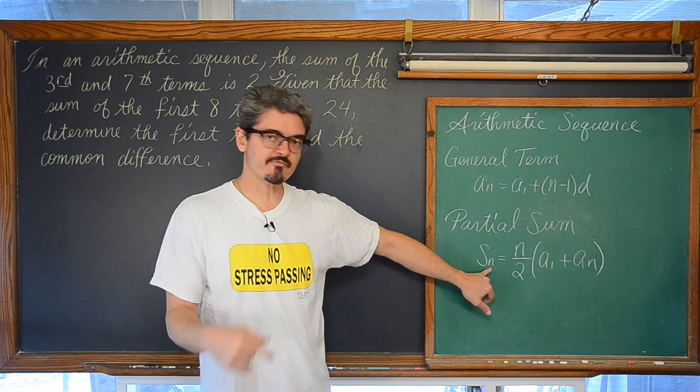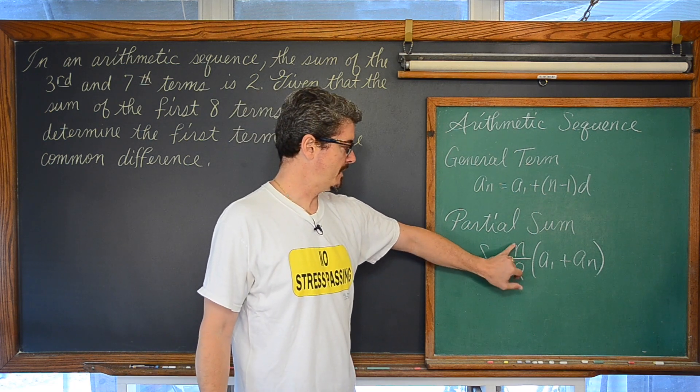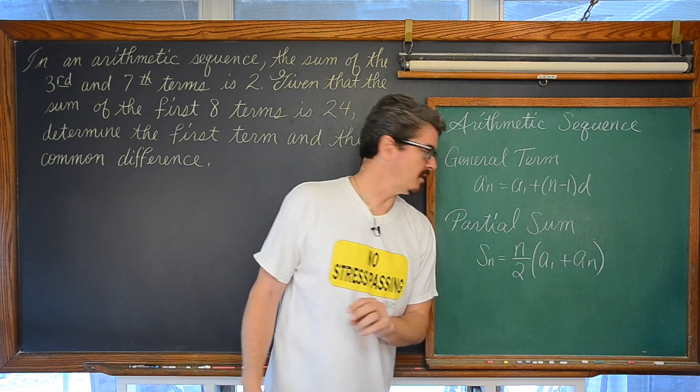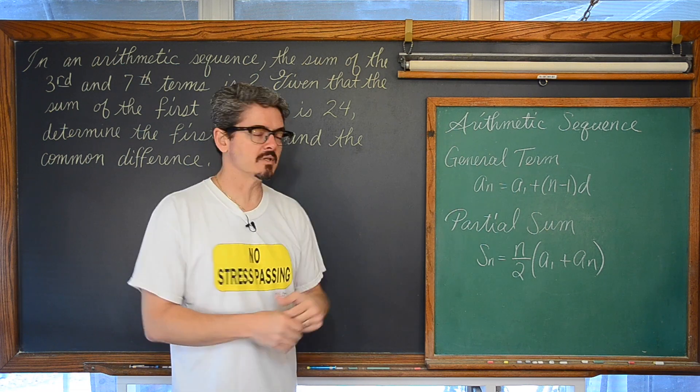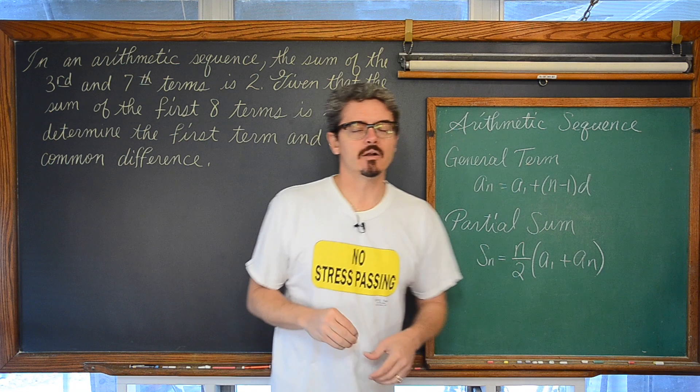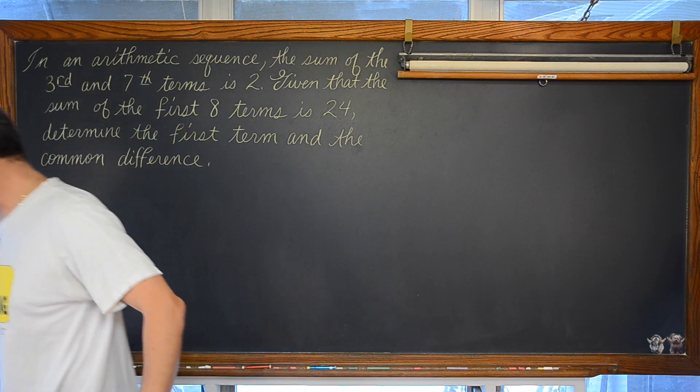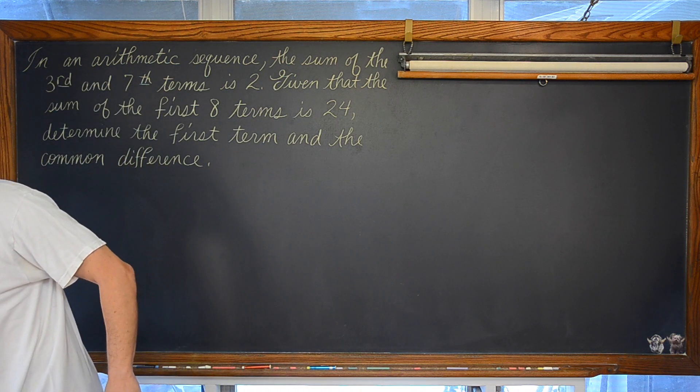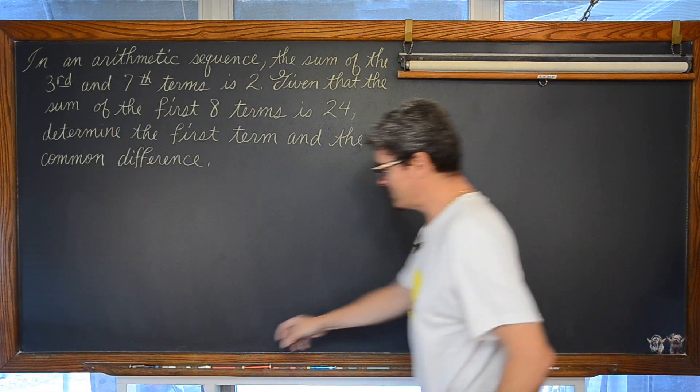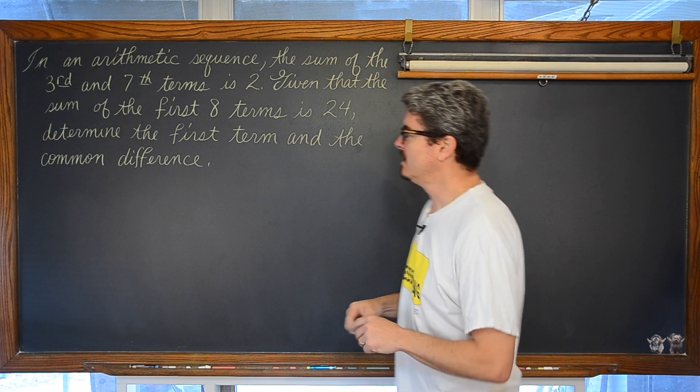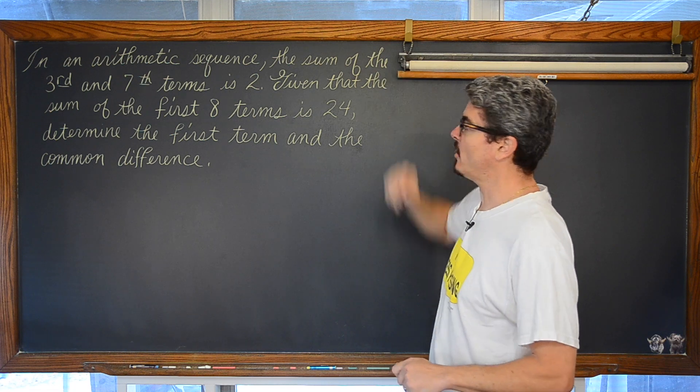Partial sum, the sum of the first so many terms, is equal to n over 2 times a sub 1 plus a sub n. We are going to rely on these formulas and our confidence in our math skills to work through this problem. And if we don't have any concrete numbers right away, that is okay. Just keep going. Know what you have written is correct. Fill in the formulas that are involved in this question.